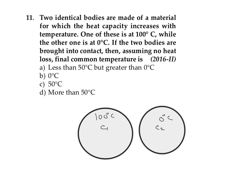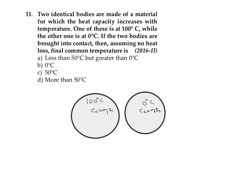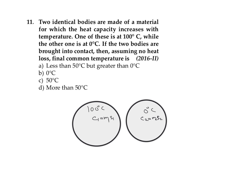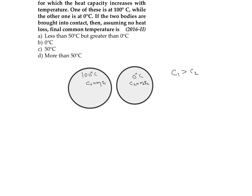Heat capacity is the product of mass and specific heat capacity — C1 = m1·s1 and C2 = m2·s2. Since the two objects are identical, their masses are the same. Because specific heat capacity depends on temperature, the object at higher temperature has greater heat capacity, so C1 is greater than C2.